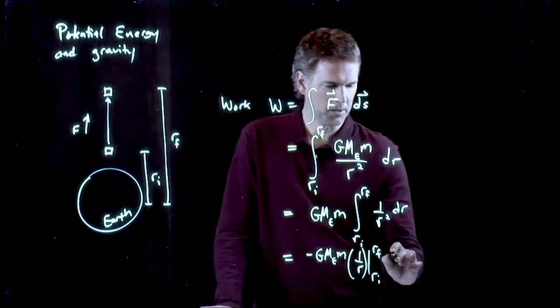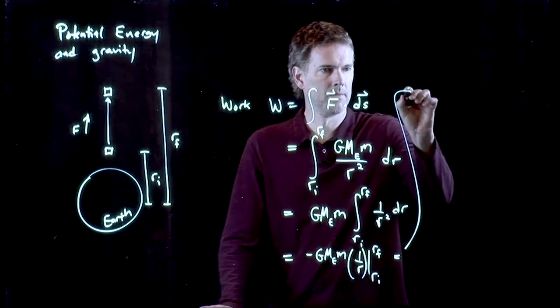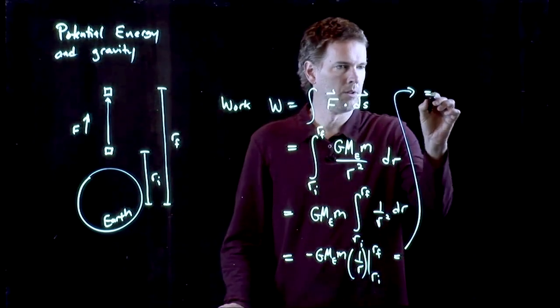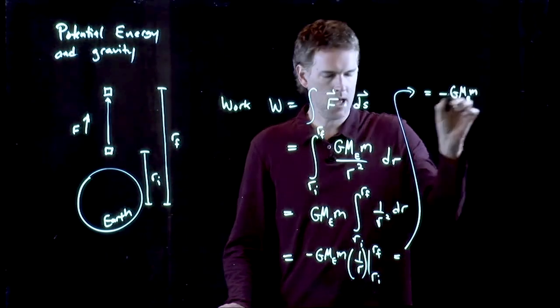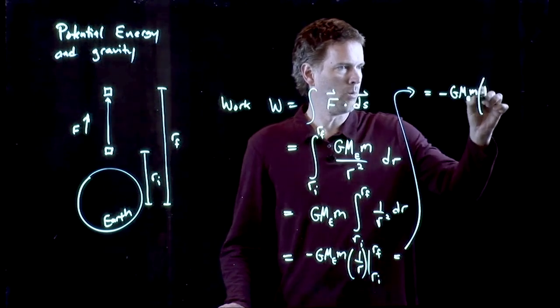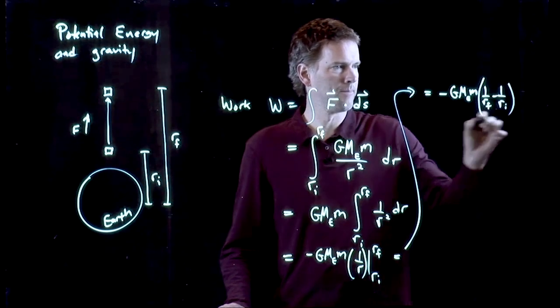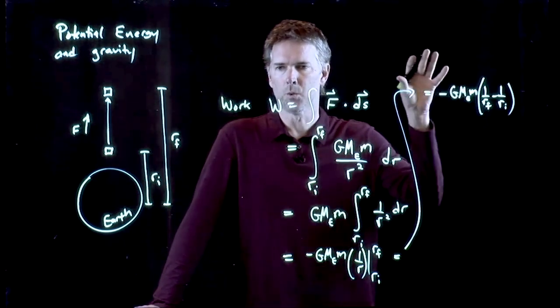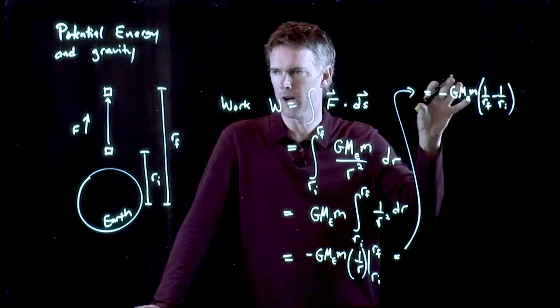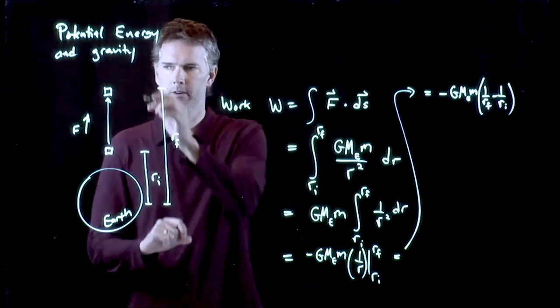And so this becomes the following. We're going to go up here. It becomes negative G m_e m times 1 over r_f minus 1 over r_i. So this is, in general, how much work it takes to move an object from one r sub i to a different r sub f.